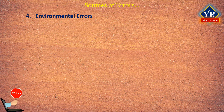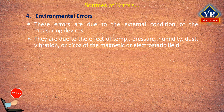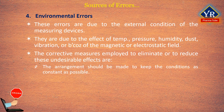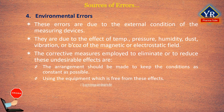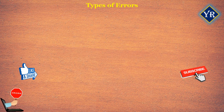Environmental errors are due to the external conditions of the measuring devices. Such errors mainly occur due to the effect of temperature, pressure, humidity, dust, vibration, or because of magnetic or electrostatic fields. Corrective measures to eliminate or reduce these undesirable effects include keeping conditions as constant as possible, using equipment that is free from these effects, using techniques that eliminate the effect of these disturbances, and applying computed corrections.